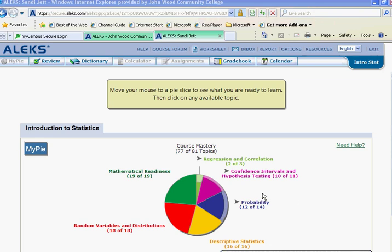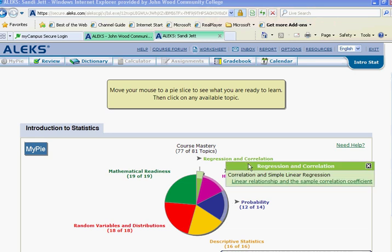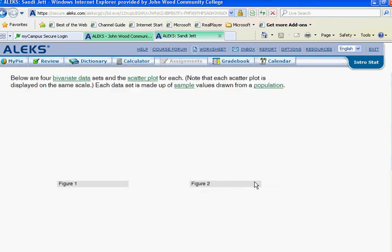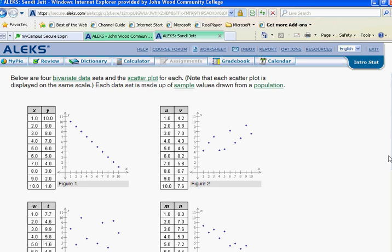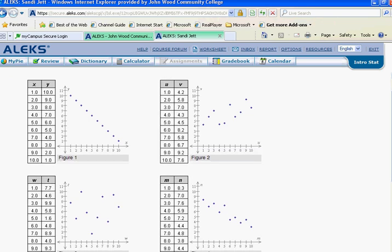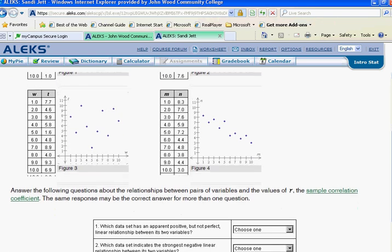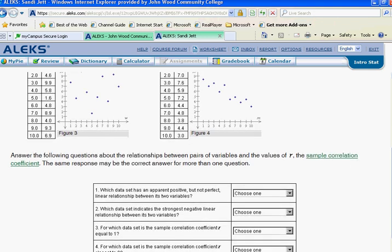Okay, right now we're looking at this pie. We're going to regression and correlation, linear relationship, and the sample correlation coefficient. It gives you four graphs and asks which data set is apparently positive but not perfect. We're going to go over and show some examples of each one.